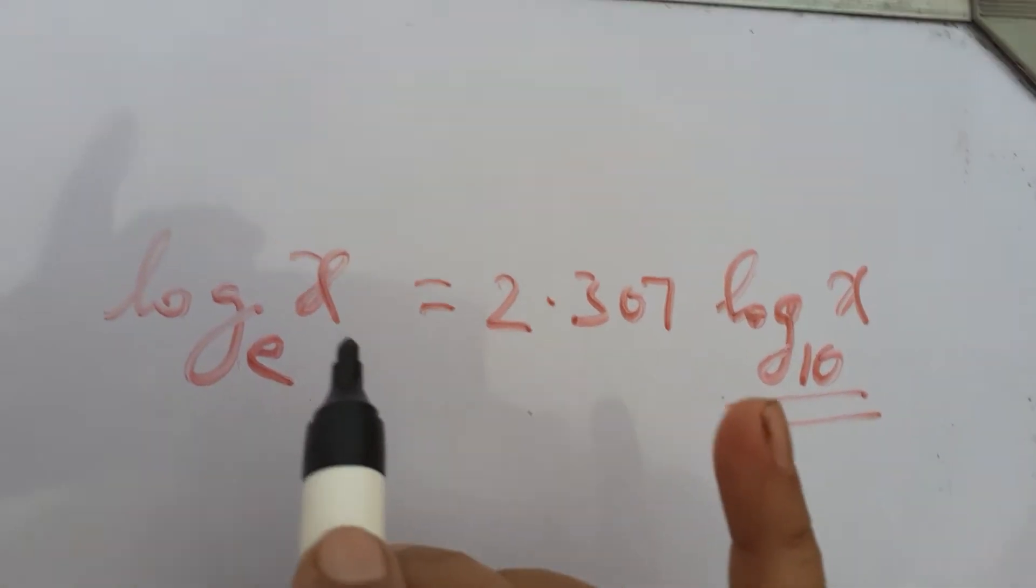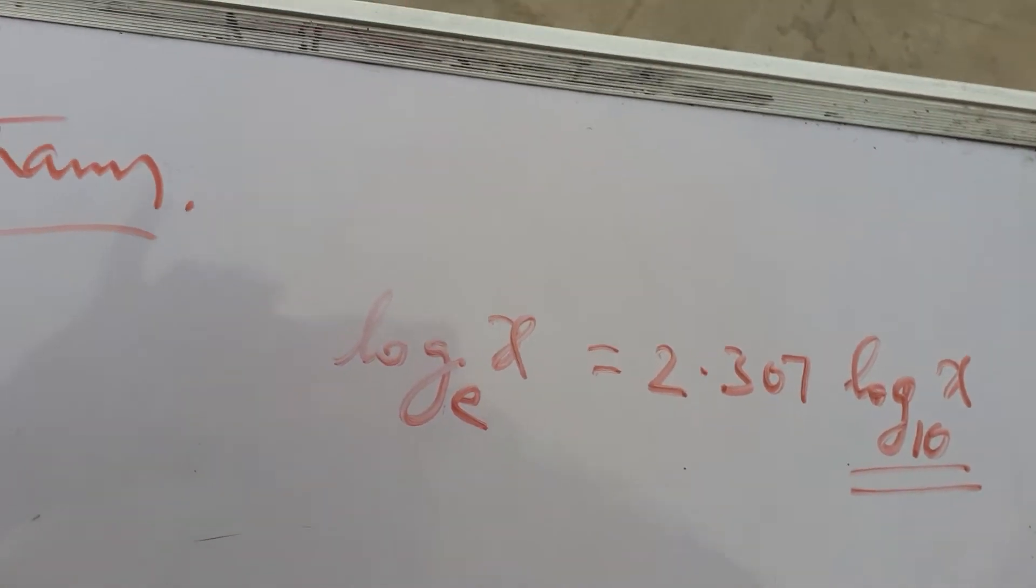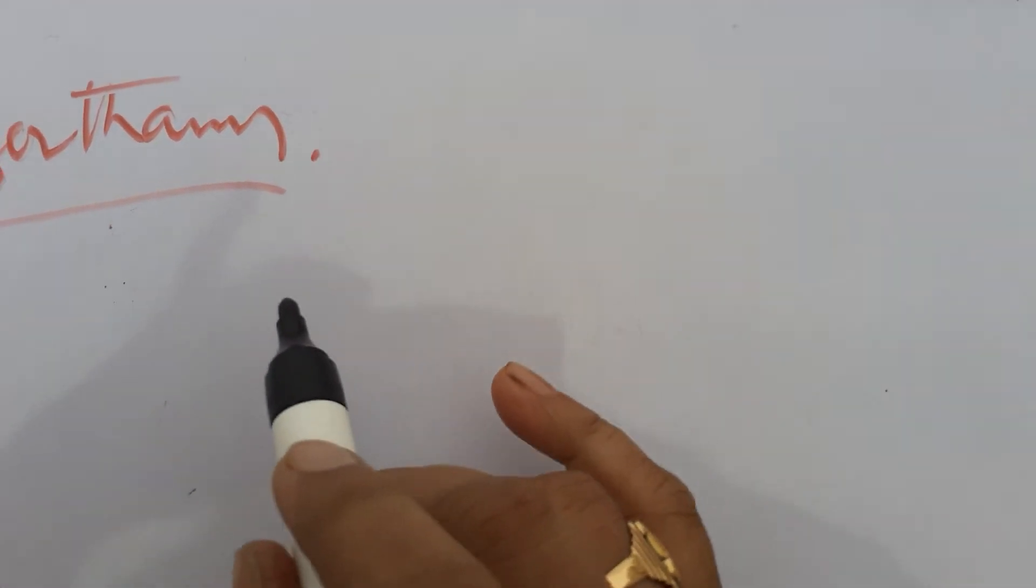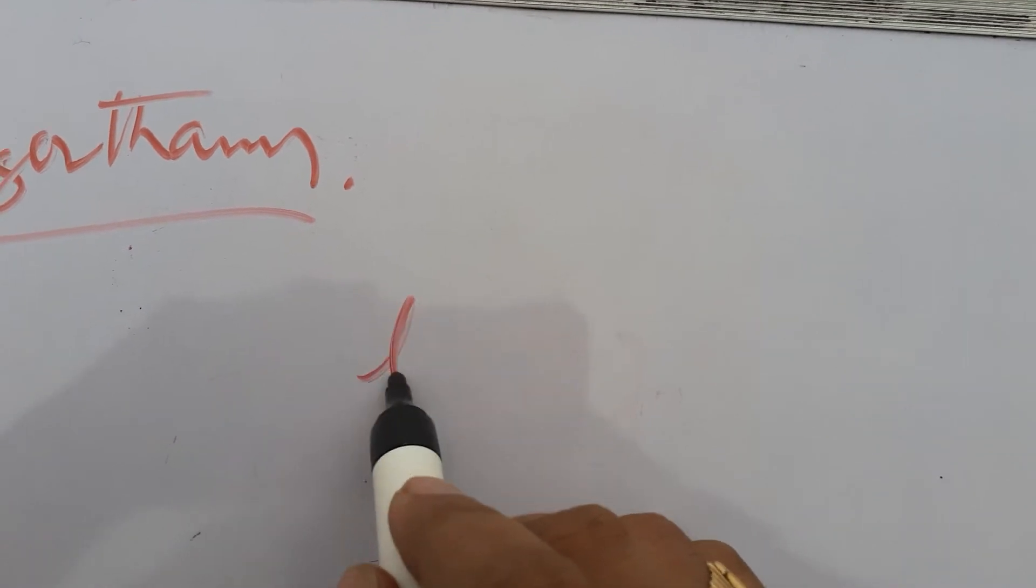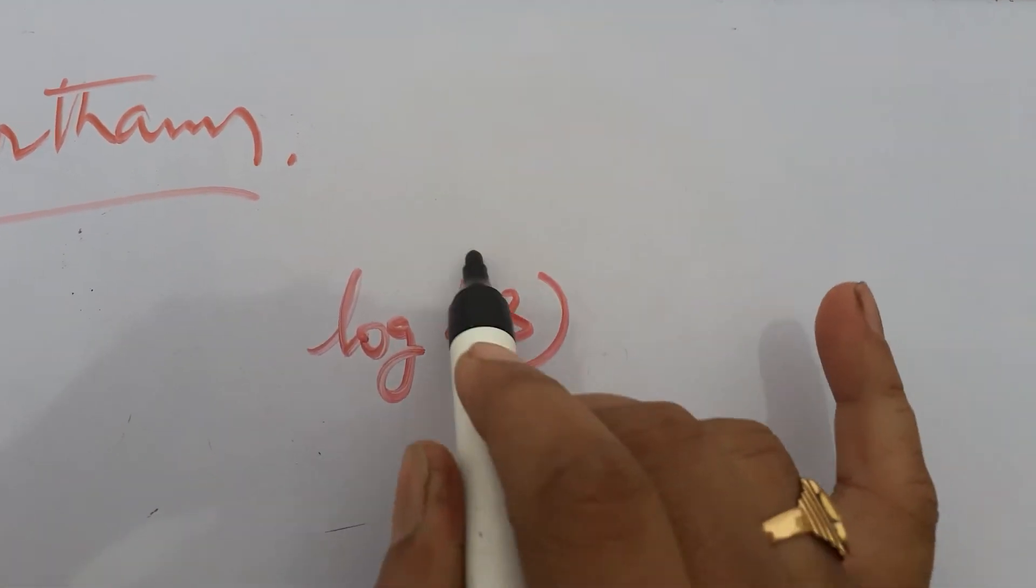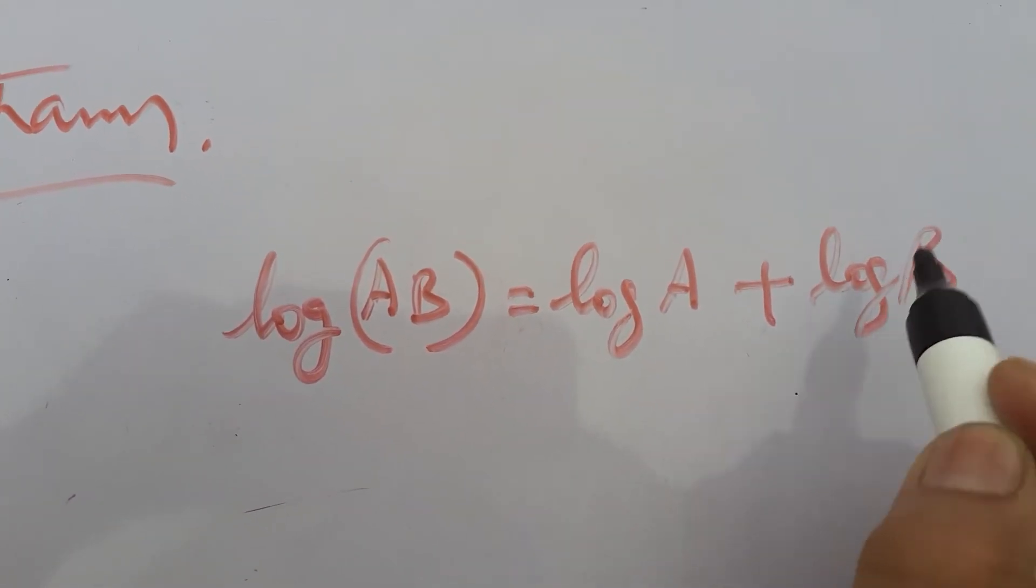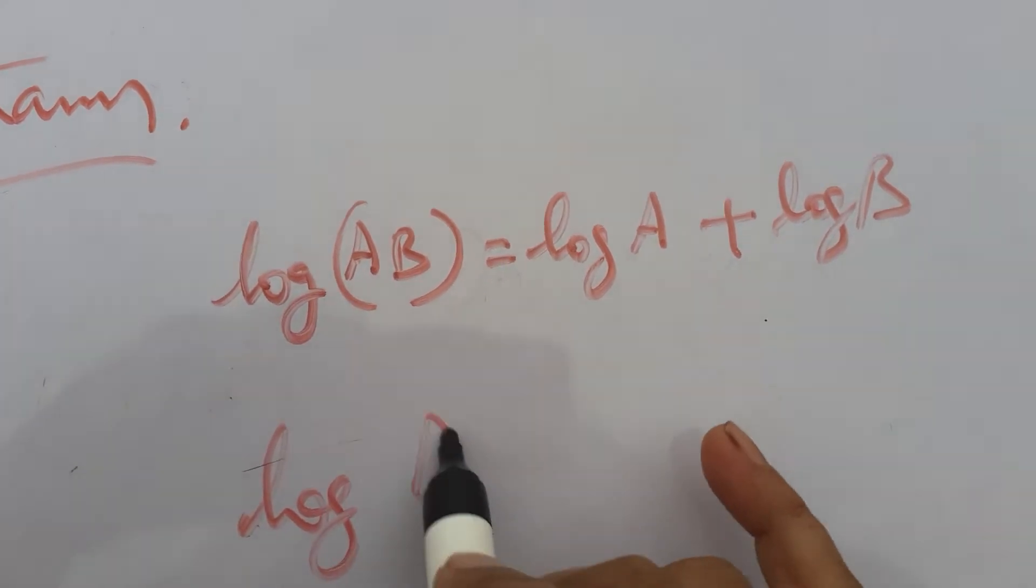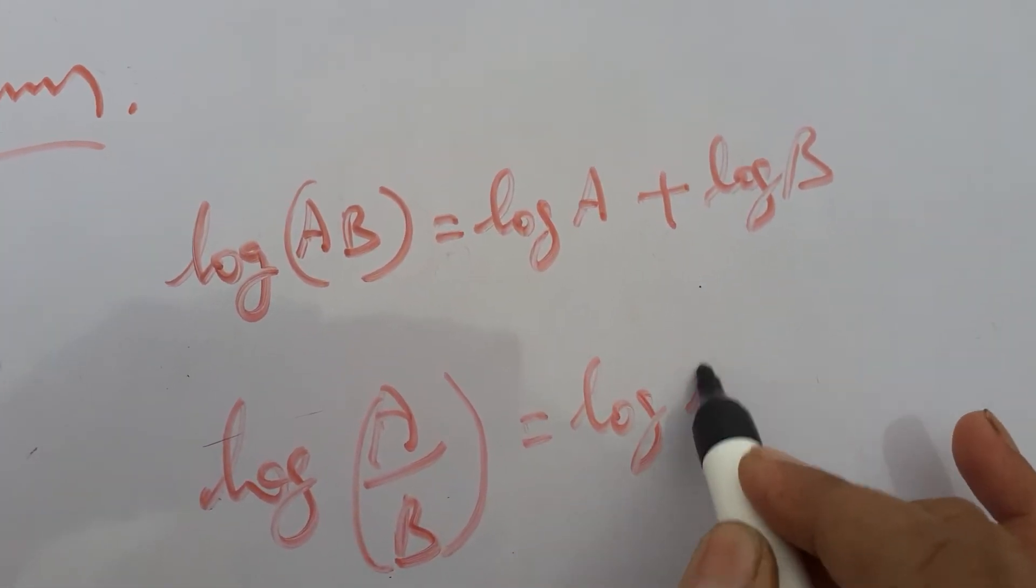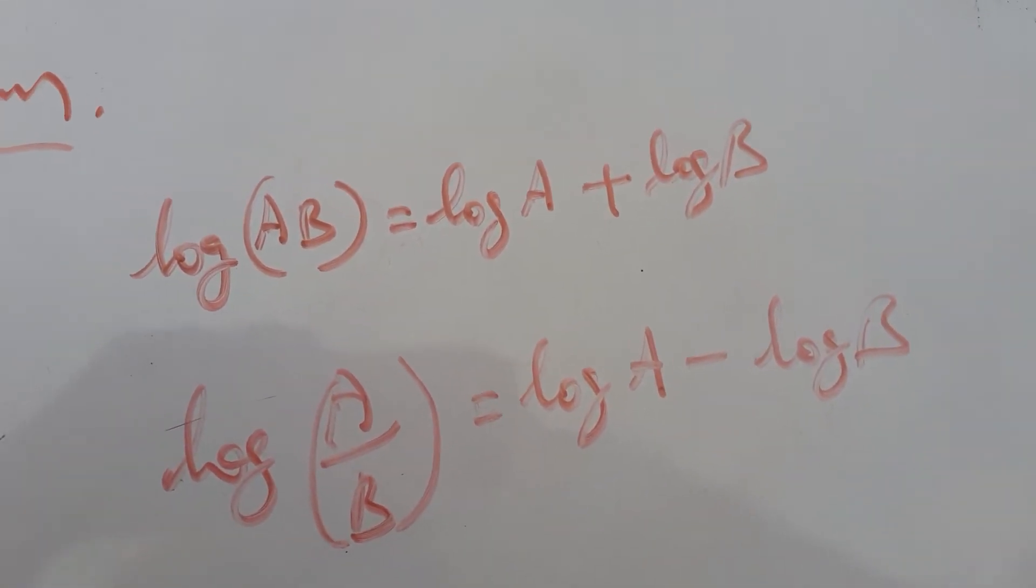Two more formulas you have to learn in logarithms: log(a × b) = log a + log b, and log(a/b) = log a - log b. These two also we require.